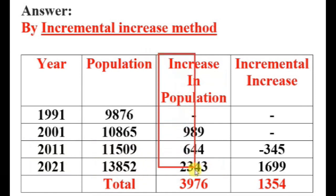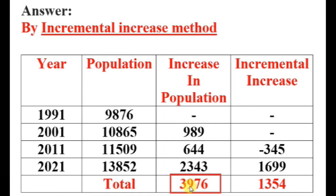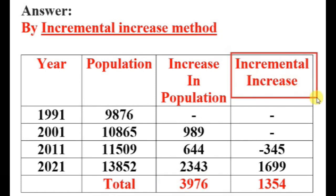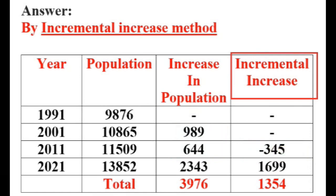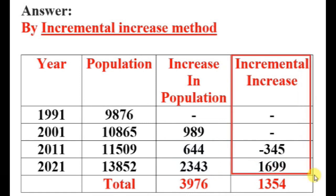We take the average of these three values — the total is 3976. Now we will find the incremental increase by taking differences between consecutive increase values: 644 minus 989 equals minus 345. The next difference gives 1699. We take the average of these two values — adding them and dividing by 2 — and we get 1354.